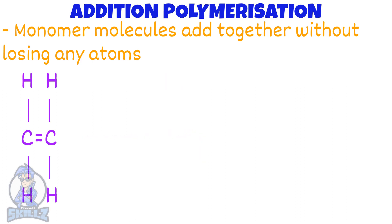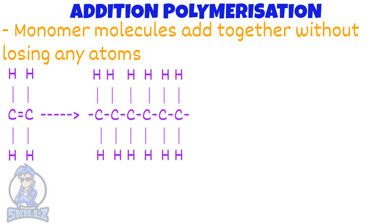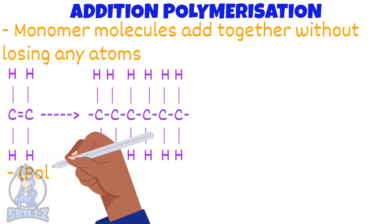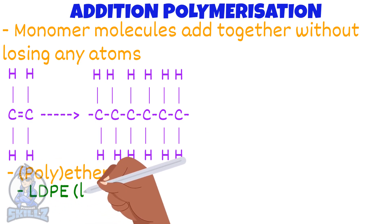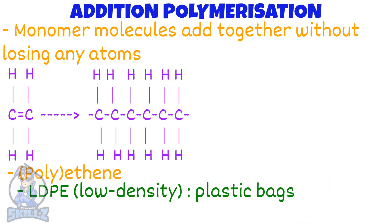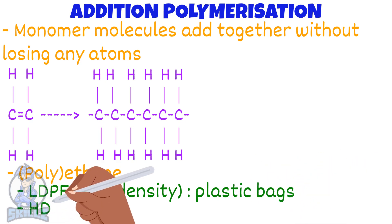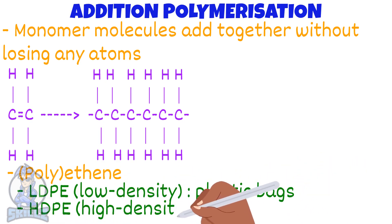Now, back to polyethene. Polyethene is commercially called polythene. It can be divided into low density or high density. Low density polyethene is used for plastic bags, while high density polyethene is used for bottles.